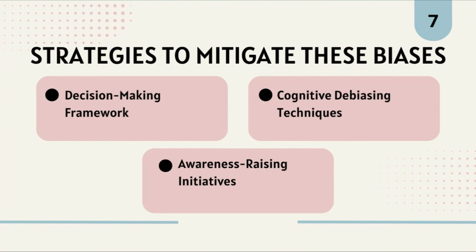Cognitive debiasing techniques involve raising awareness by educating people about common biases and their impacts, teaching them how to recognize biases, and increasing self-awareness to reduce susceptibility. This also includes pre-mortem analysis: imagining that a decision has already failed and working backward to identify potential flaws. This highlights potential risks in advance and encourages proactive problem solving.